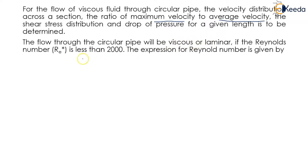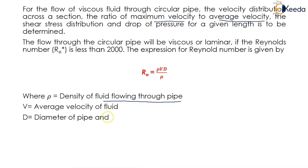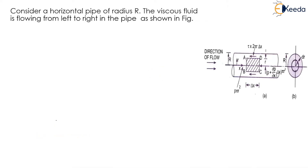If the Reynolds number, i.e. Re, is less than 2000. The expression for Reynolds number is given by Re is equal to rho v d upon mu, where rho is the density of the fluid flowing through the pipe, v is the average velocity of the fluid, and d is the diameter of the pipe. Mu is the viscosity of the fluid.